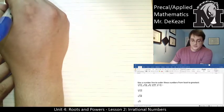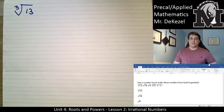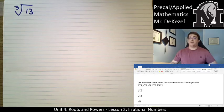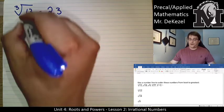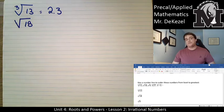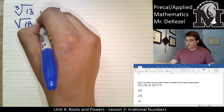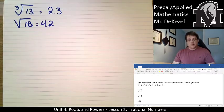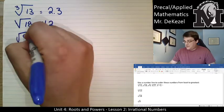We want to estimate each number. The cube root of 13 — I know the cube root of 8 is 2 and the cube root of 27 is 3, and 13 is closer to 8, so I'd say approximately 2.3. The square root of 18 — the square root of 16 is 4 and the square root of 25 is 5, so it's probably about 4.2. The square root of 9 is exactly 3.